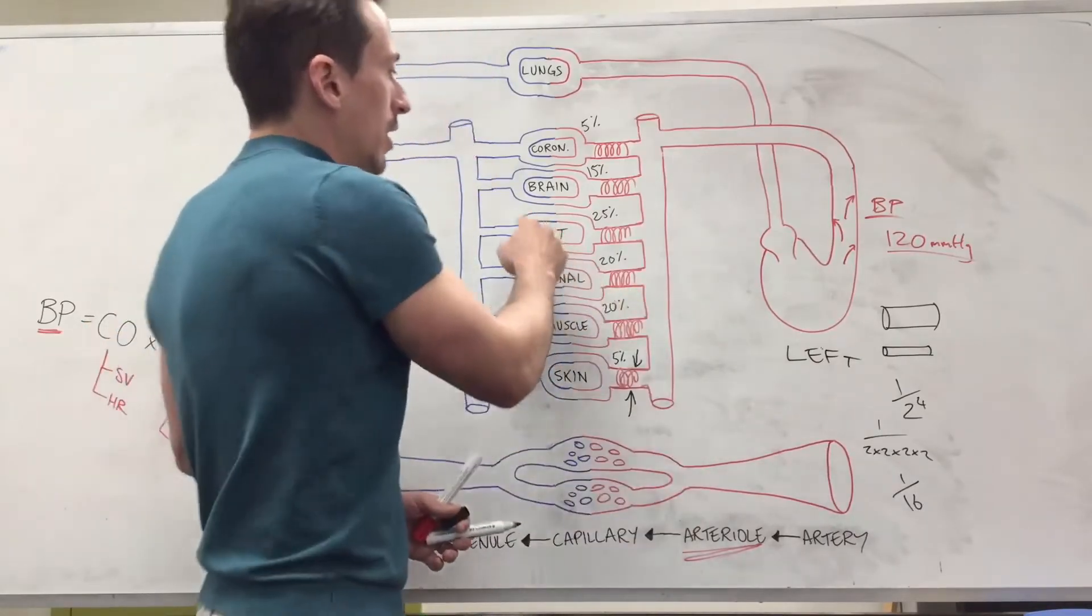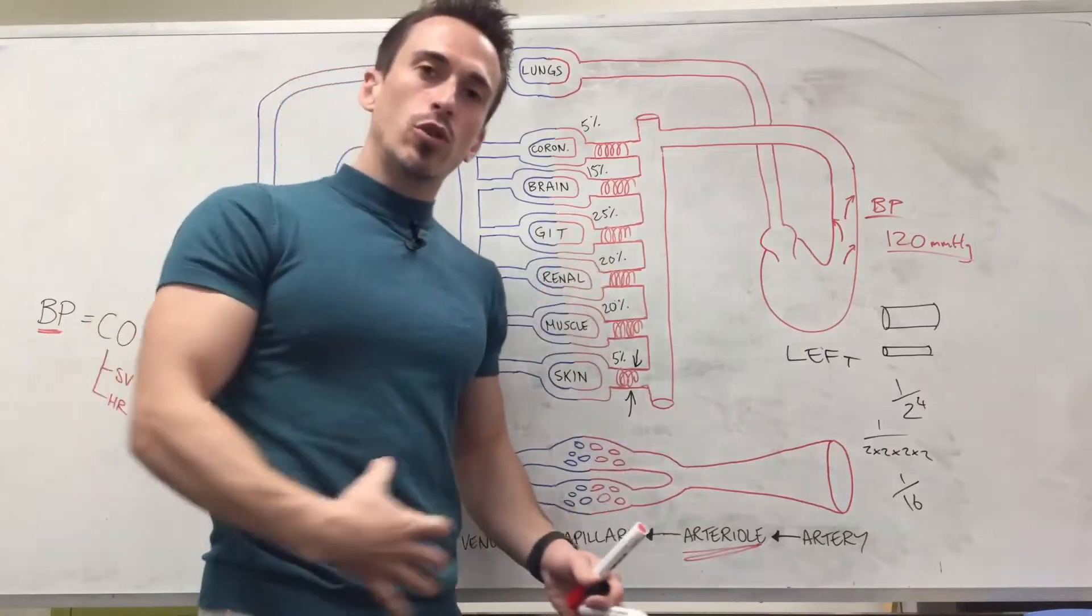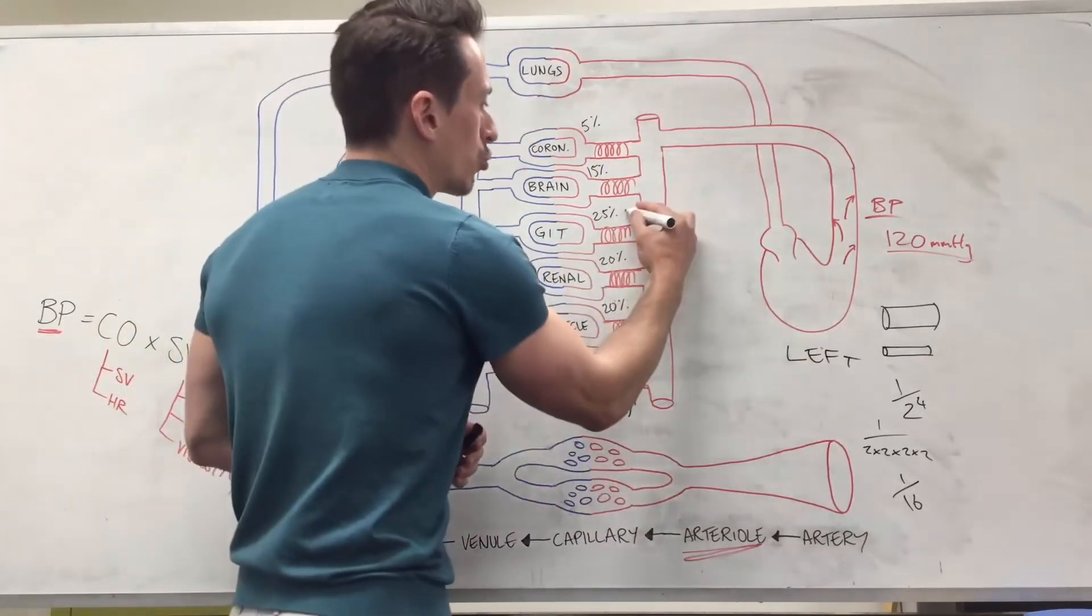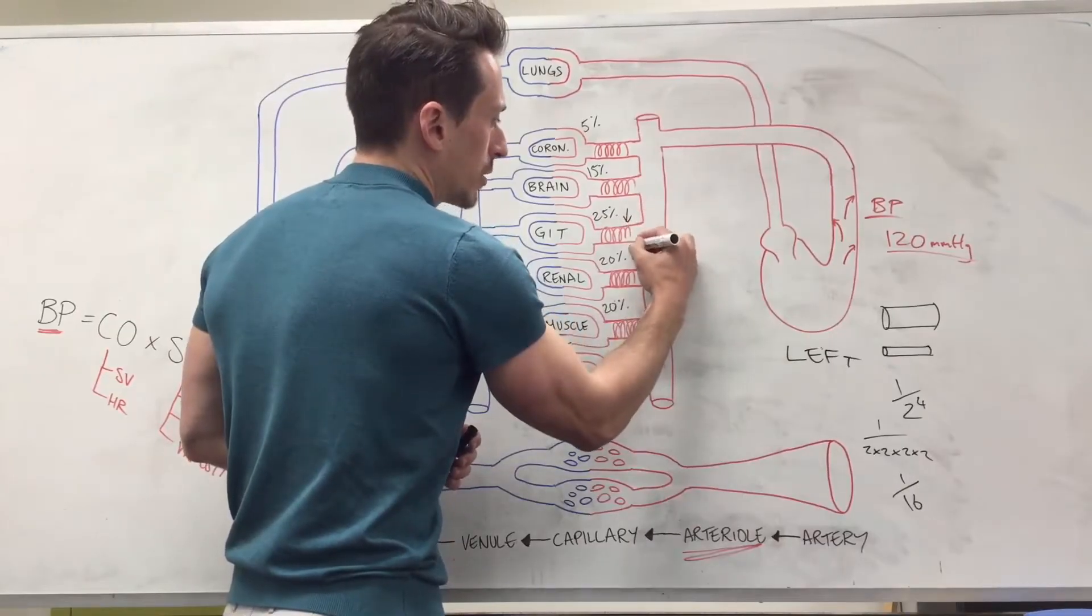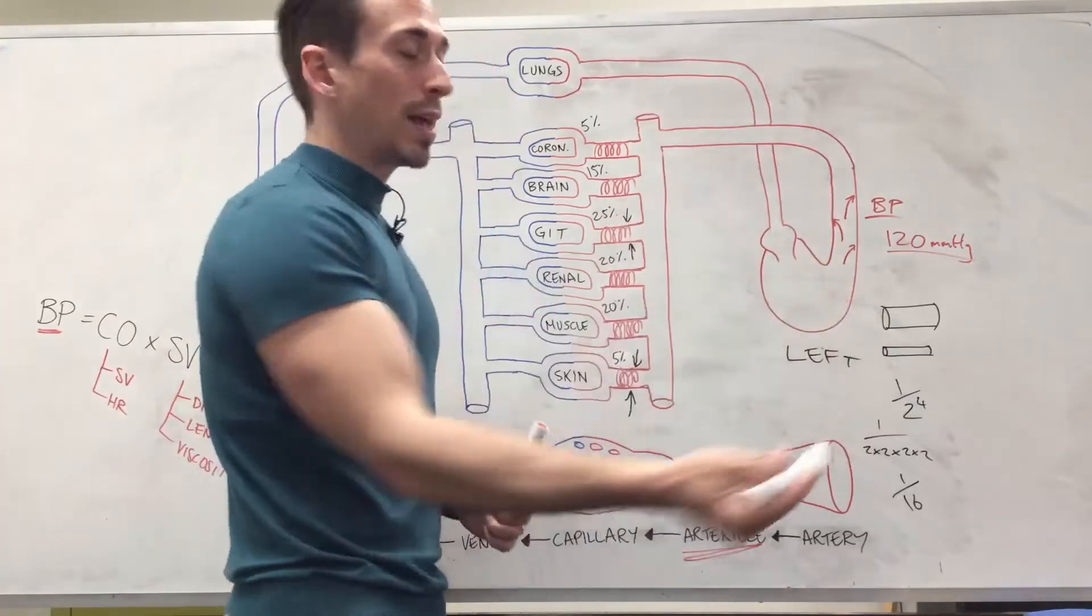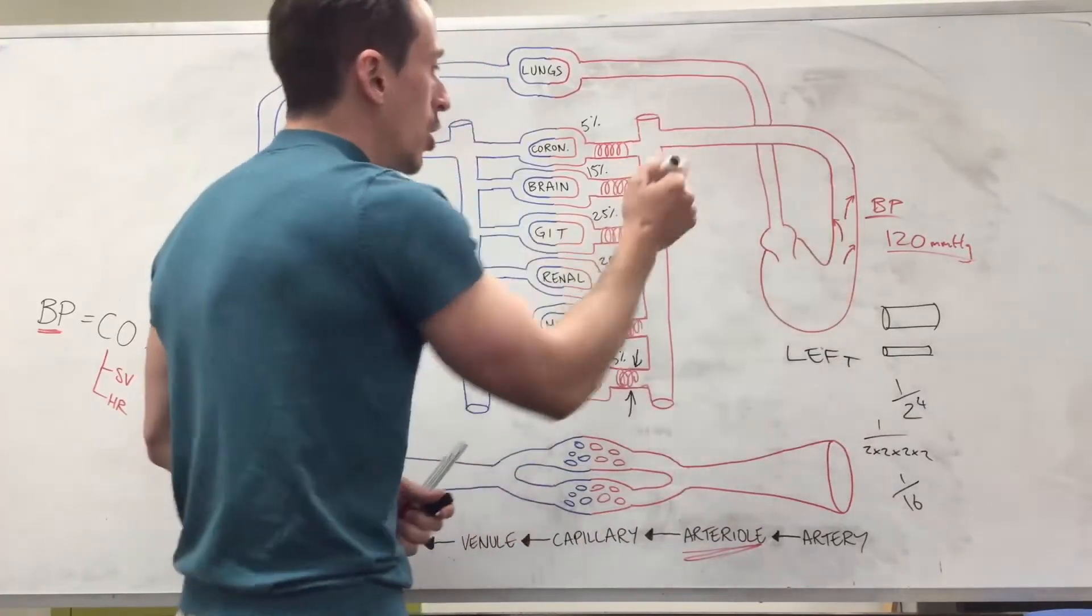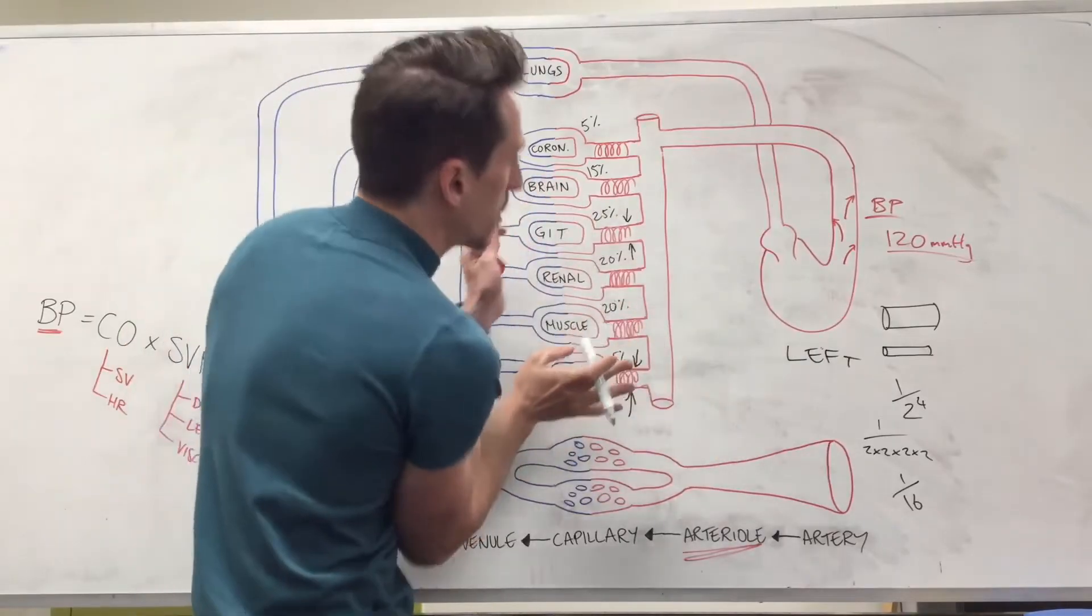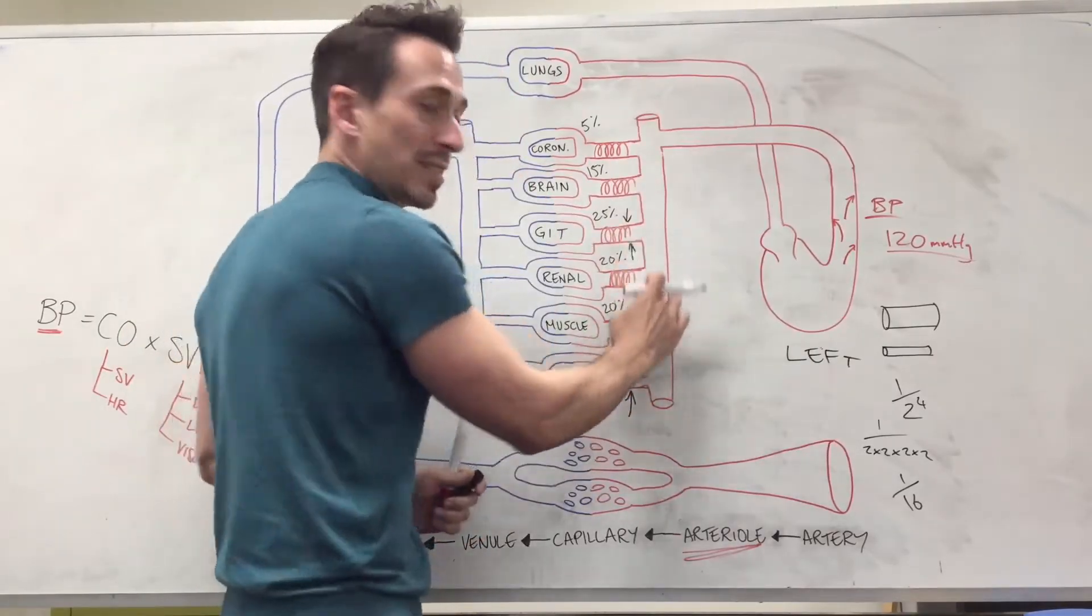Another thing that happens is your GIT, your gastrointestinal tract. When you're scared, you don't need to use that, so the muscles there constrict as well in the arterioles. 25% of your cardiac output, or blood that comes out of your left ventricle every minute, goes to your GIT. So now 25 plus 5%, 30% of your blood volume, gets shunted back into this systemic system.